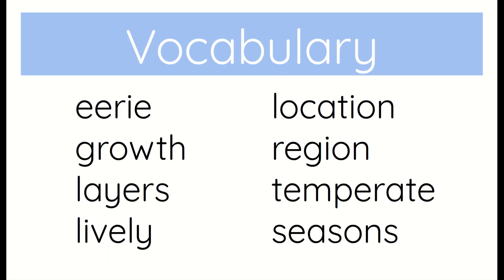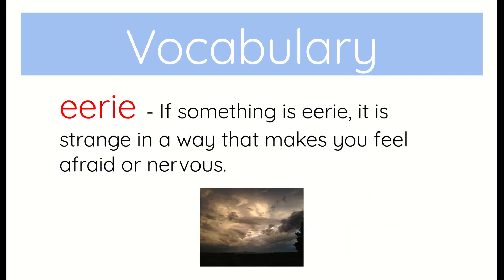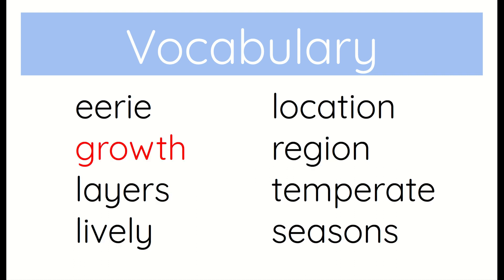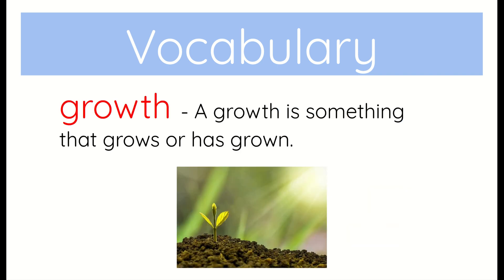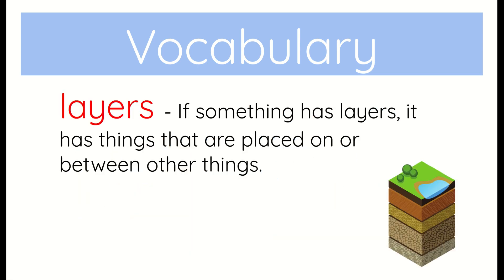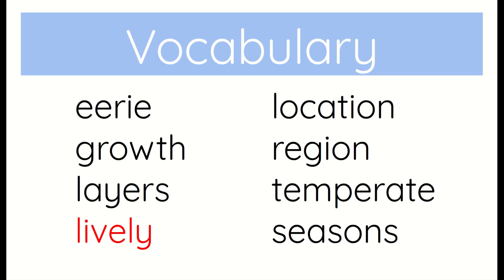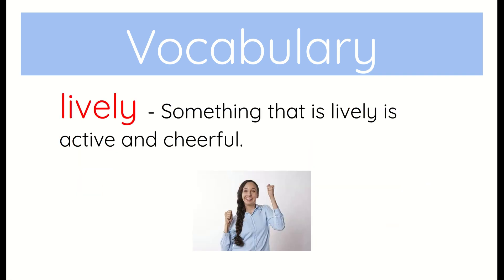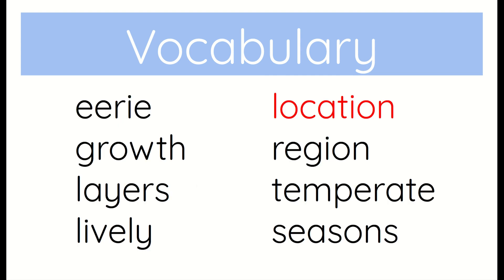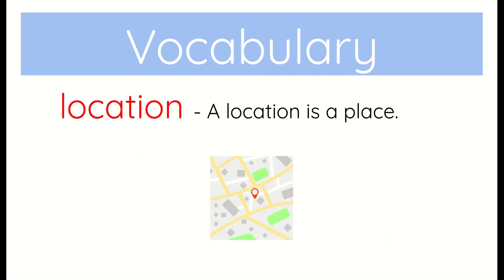Here are our vocabulary words for the week. Eerie — if something is eerie, it is strange in a way that makes you feel afraid or nervous. Growth — a growth is something that grows or has grown. Layers — if something has layers, it has things that are placed on or between other things. Lively — something that is lively is active and cheerful. Location — a location is a place.